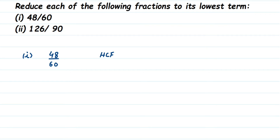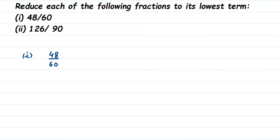48 and 60 are both divisible by 2, but 2 is not the highest common factor because these numbers are also divisible by 4 and higher numbers. We need to find the highest number that can divide both. We'll use prime factorization of both numbers separately to find the HCF.